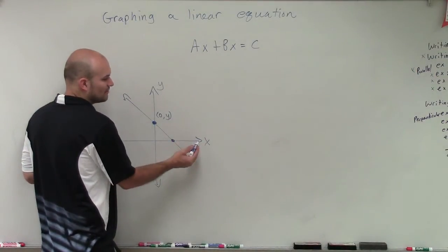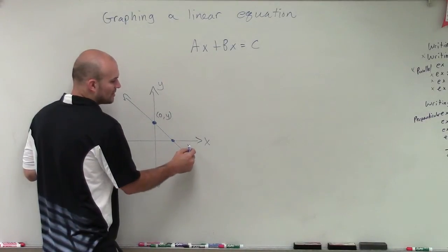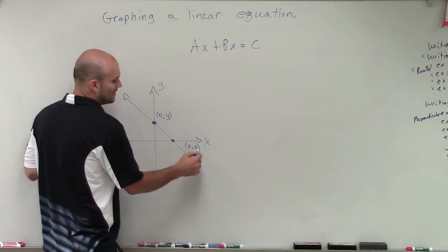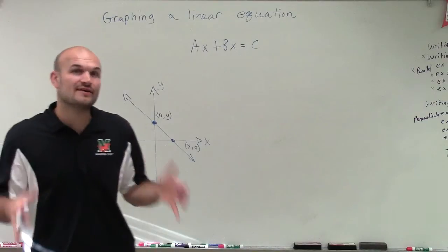In the same thing, when we're looking at the x-intercept, we know that we're going to have an x-value, but our y-value is going to be 0. And that's very, very important.